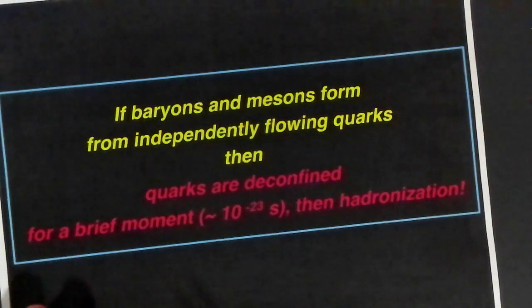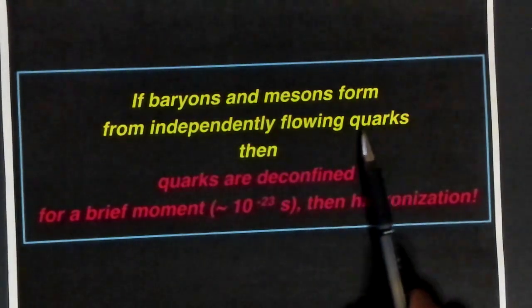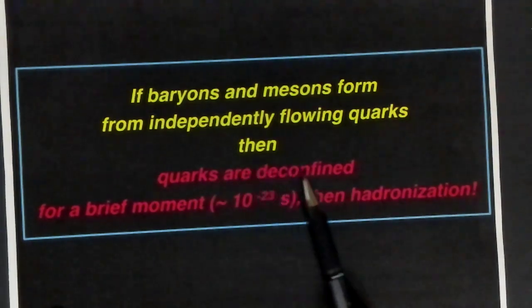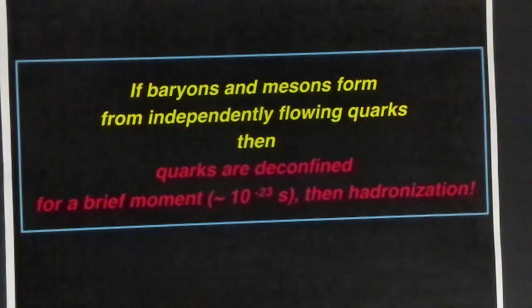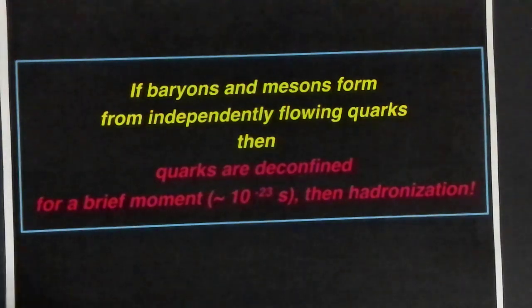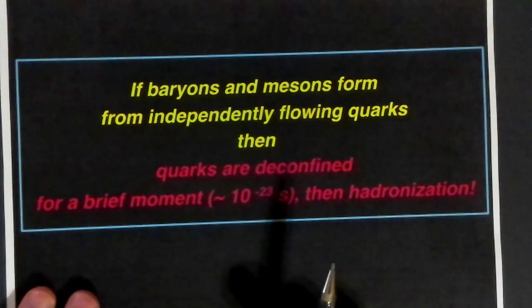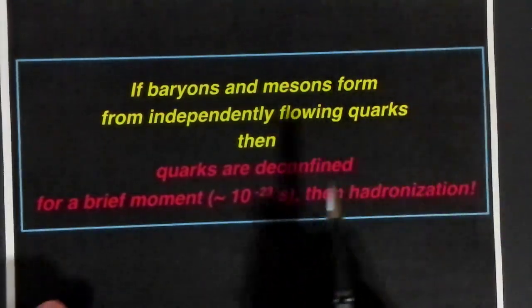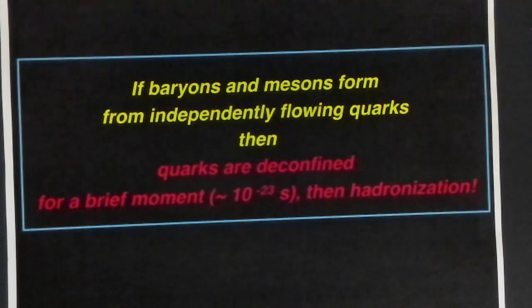Just to wrap up then today's lecture, baryons and mesons form from independently flowing quarks and then quarks that you can find for a brief moment and then you have hadronization. You have this hierarchical picture where in the beginning you have this quark-gluon plasma where you have this almost perfect liquid with as low viscosity as possible with elliptic flow at the quark level. Then as you get more and more dilute, you have hadronization and then you just have the shower of particles coming out. See you next time.